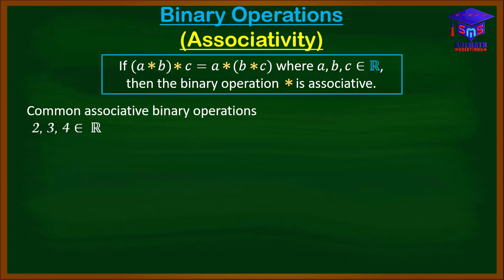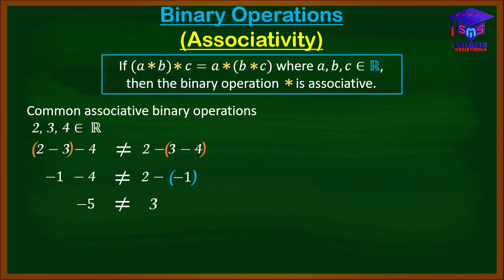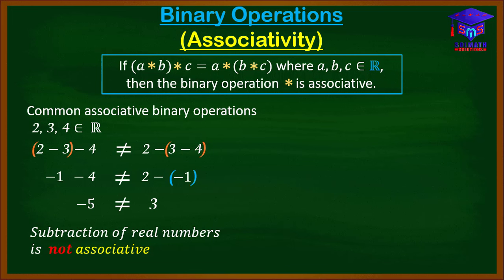Now with the same numbers 2, 3, and 4: if someone decides to first subtract 3 from 2, are they going to get the same result as someone who first subtracts 4 from 3? Let's check. (2-3)-4 = -1-4 = -5, but 2-(3-4) = 2-(-1) = 3, which is not equal to -5. Therefore, subtraction of real numbers is not associative.